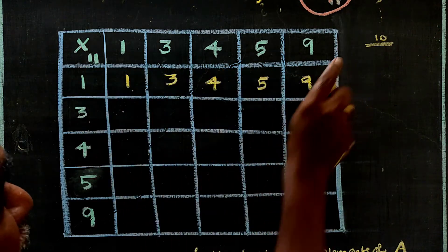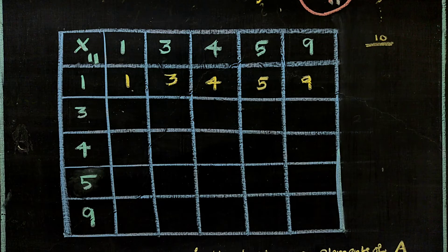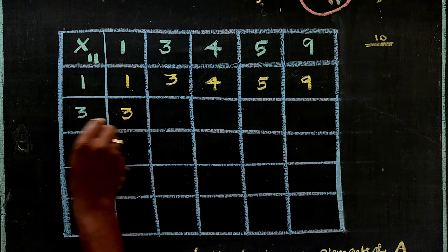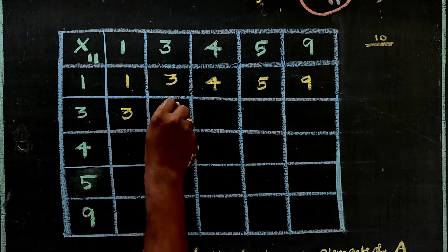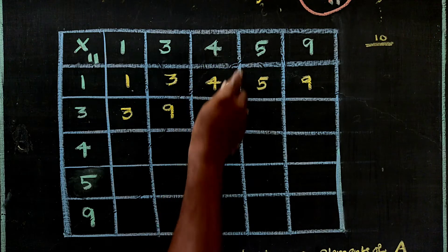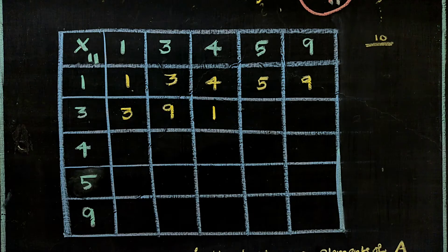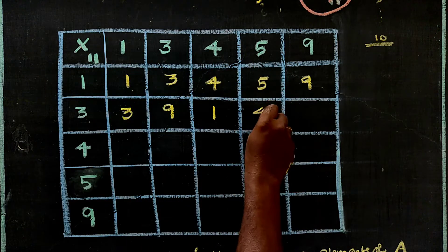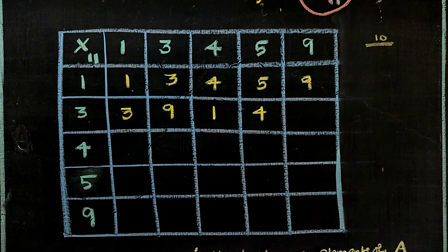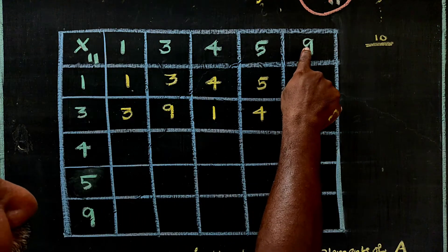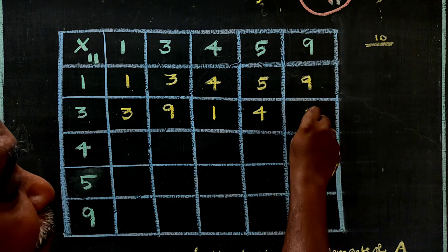When we multiply 1 with everything, nothing changes — that shows 1 is the identity element. Now for 3: 3×1=3, 3×3=9, 3×4=12, and since 12 is greater than 11, 12 mod 11 = 1. Then 3×5=15, and 15 mod 11 = 4. And 3×9=27, and 27 mod 11 = 5.